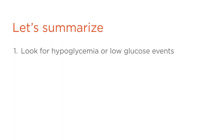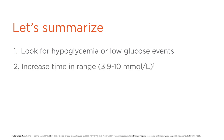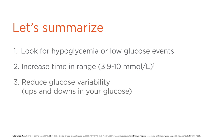Let's summarize. When reviewing your glucose readings, you want to look for hypoglycemia or low glucose events. Second, you want to increase your time in range. And third, you want to reduce your glucose variability — those up and down waves.